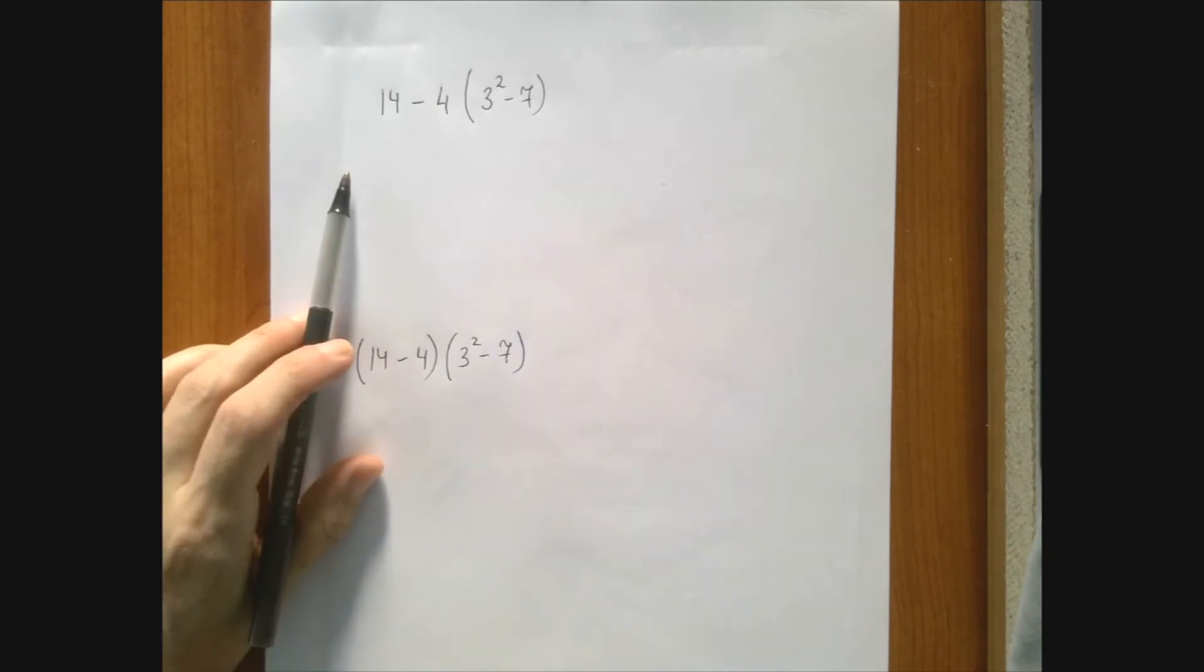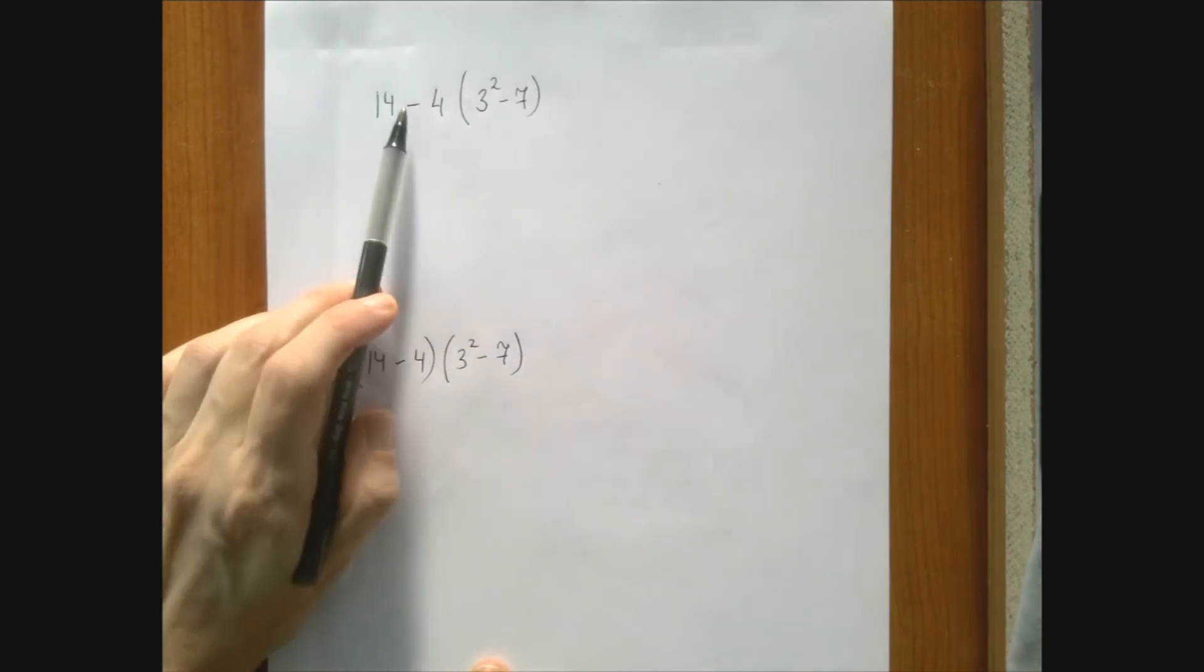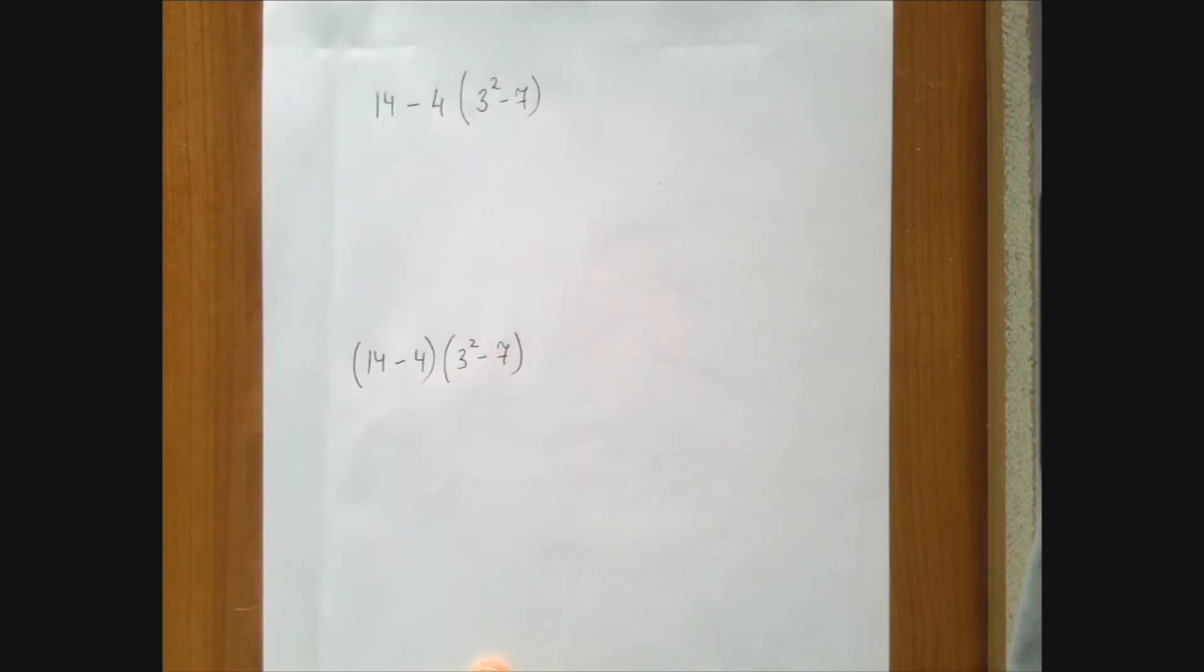Let's see the first one. This is an order of operations problem. We have subtraction, multiplication, exponentiation and subtraction. We have four operations.